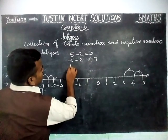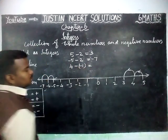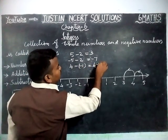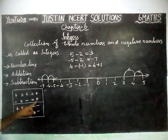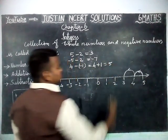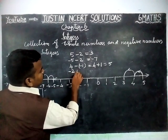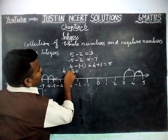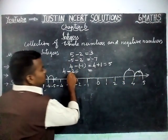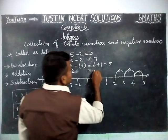Next example: 4 minus minus 1. Minus into minus equals plus, so this becomes 4 plus 1. From 4, move right-hand side — the answer is 5. And for 4 minus 2: starting from 4, move left-hand side two steps — one, two — so the answer is 2.